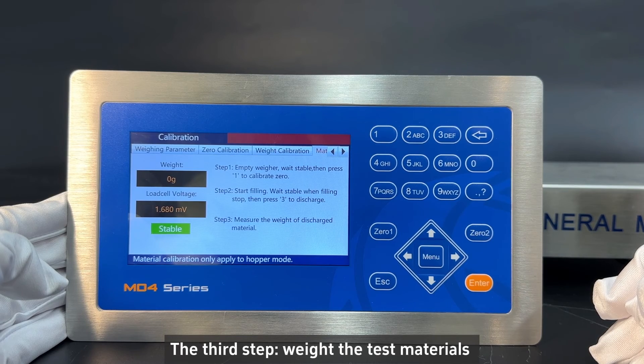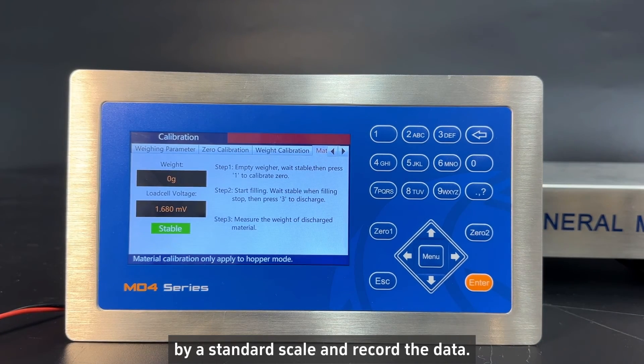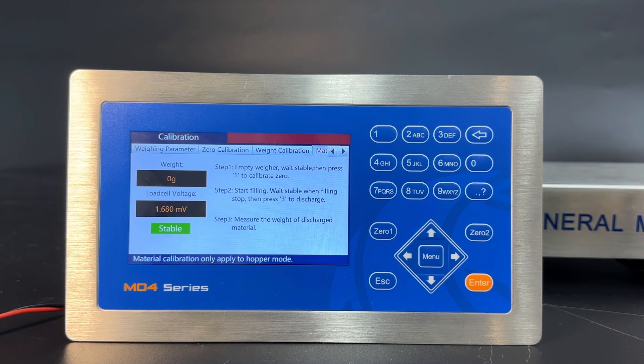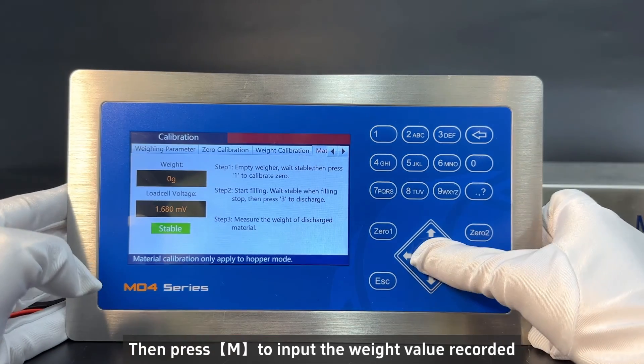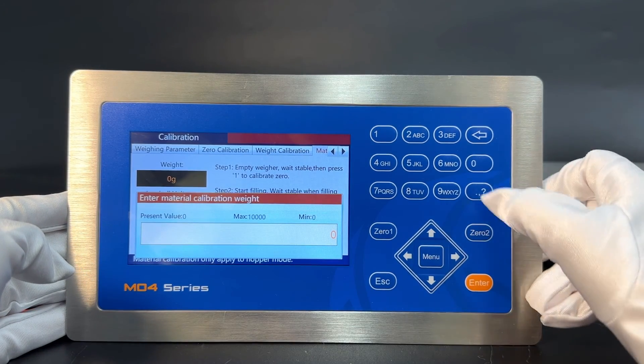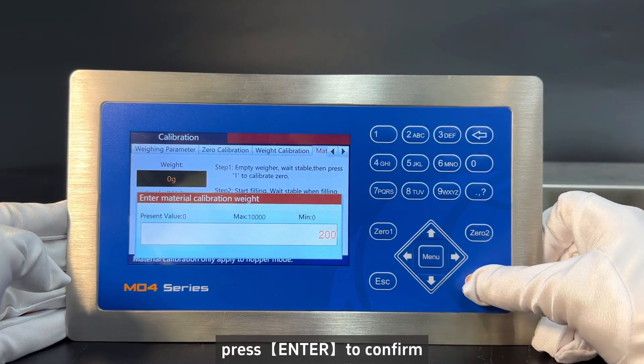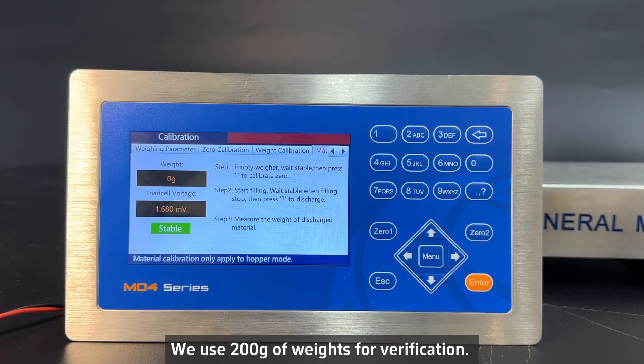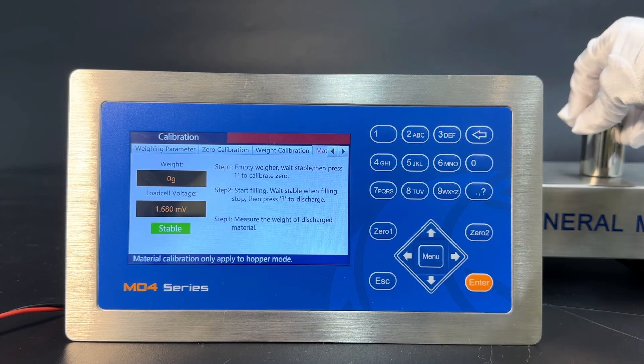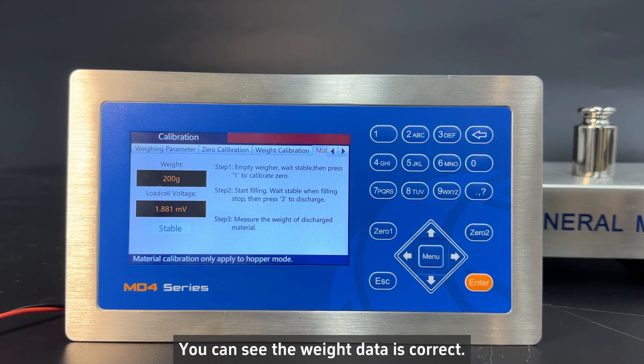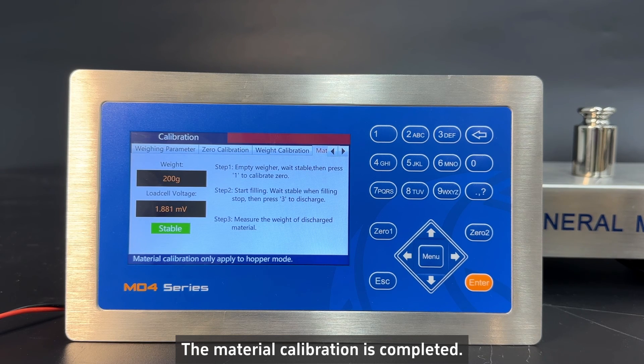The third step: weight the test materials by a standard scale and record the data. Then press M to input the weight value recorded. Press Enter to confirm. We used 200 gram of weights for verification. You can see the weight data is correct. The material calibration is completed.